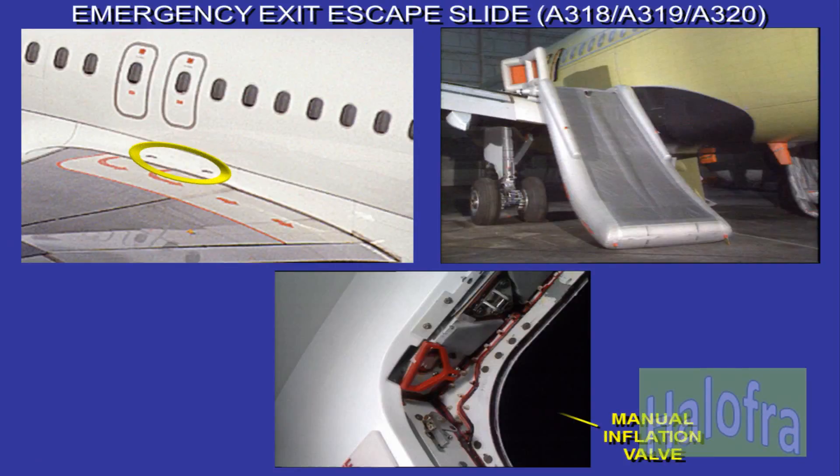The overwing emergency exits control a dual-lane escape slide, which is automatically deployed when an exit is opened. The escape slide containers are located in the wing root fairing and the inflation reservoirs are in the aft cargo compartment. Two emergency lights underneath the wing exits illuminate the escapeway, pointed out with red fluorescent arrows. Should the automatic sequence fail, a red handle located in each exit frame when pulled activates manual inflation.